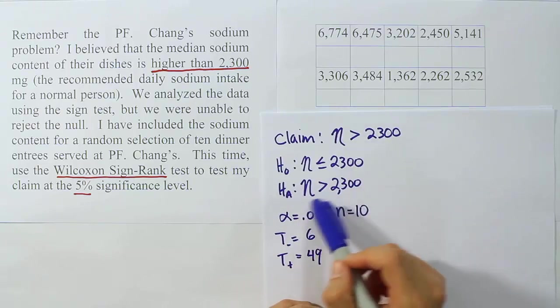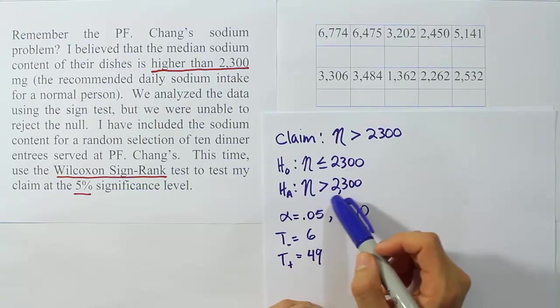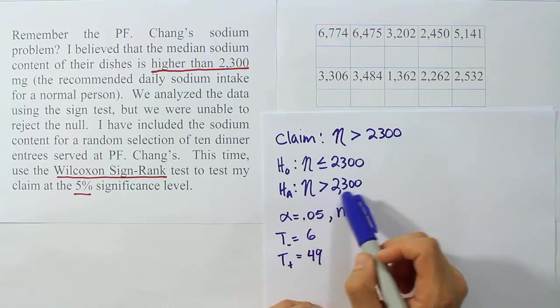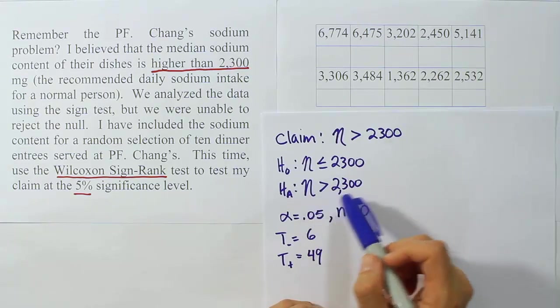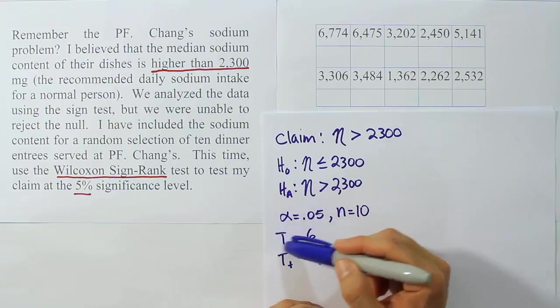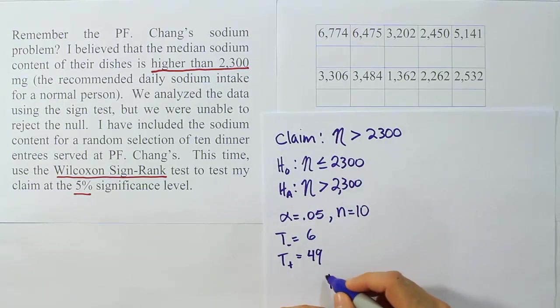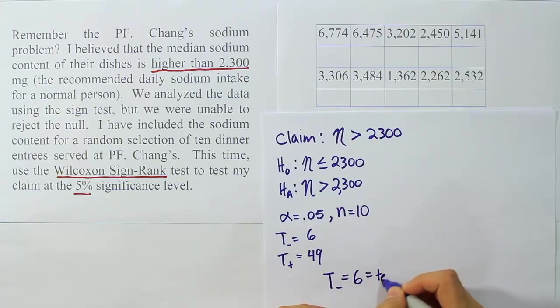That's kind of what we see here in the data, but we don't have to actually see it. We're just talking about what's here theoretically. Theoretically, if the η is bigger than 2300, then when we subtract 2300 from the values, we should get more positive than negative. So that means the underdog is the negative. So our test stat is going to be the negative. Remember, that's how we do the test stat. So T negative equals 6 equals our test stat.